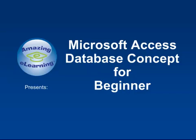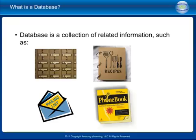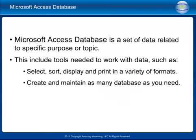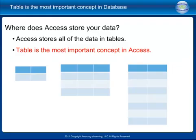Microsoft Access database concepts for beginners. A database is a collection of related information, such as a library's card catalog, a recipe book, mailing list, or phone book. A Microsoft Access database is a set of data related to specific purposes or topics. This includes tools needed to work with data such as select, sort, display, and print in a variety of formats. You can create and maintain as many databases as you need.